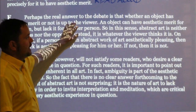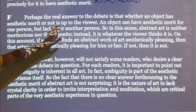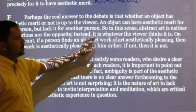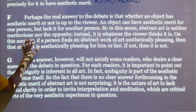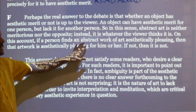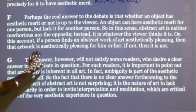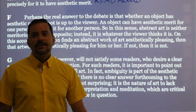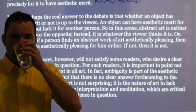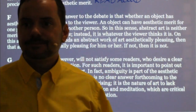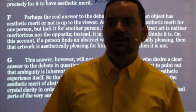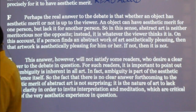Paragraph F: Perhaps the real answer to the debate is that whether an object has aesthetic merit or not is up to the viewer. An object can have aesthetic merit for one person but lack it for another. So in this sense, abstract art is neither meritorious nor the opposite - it is whatever the viewer thinks it is. If a person finds an abstract work of art aesthetically pleasing, then that artwork is aesthetically pleasing for him or her. This paragraph is about the point of view of the viewer - beauty is up to the perspective of the viewer.